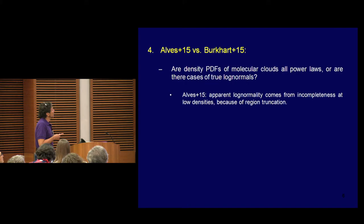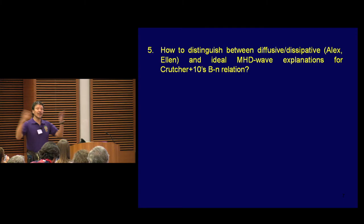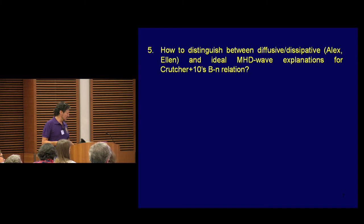Another question is what I was just talking about in my talk: this MHD wave explanation or interpretation of the B magnetic field–density relation. Of course, we know that Alex has been insisting on the possibility that it's due to turbulent reconnection. And Ellen Zweibel and Fabian Haich have an interpretation in terms of ambipolar diffusion. How can we tell? And that's a question for the observers — we can tell.